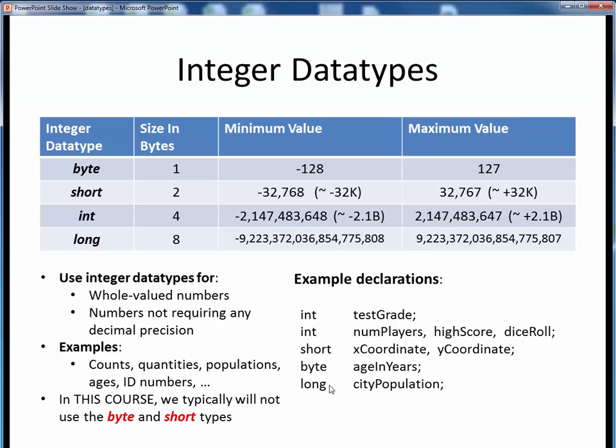For example, a dice roll or a population doesn't require decimal accuracy, nor does an age once you're above four or five years old, I suppose.